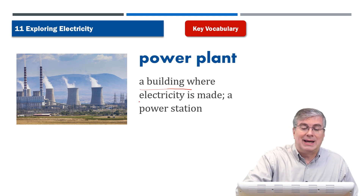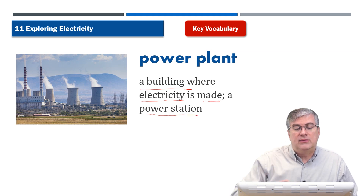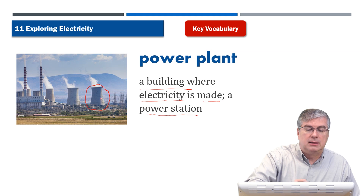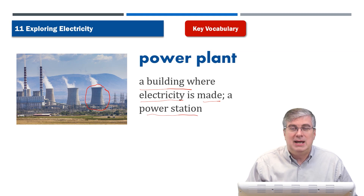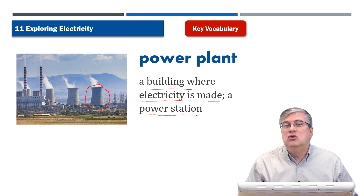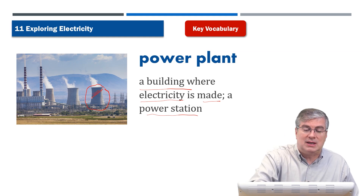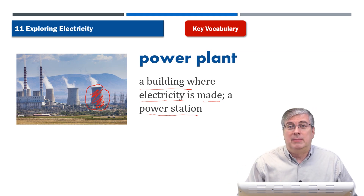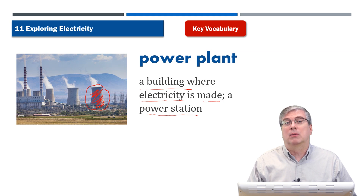A 'power plant' is a building where electricity is made — we also call it a power station. This type of power plant has a very unique-looking tower, which is a symbol of a nuclear power plant using nuclear energy to produce electricity. Other power plants don't use nuclear power — for example, a dam uses water to turn the turbine to make electricity, and that can also be a power plant.